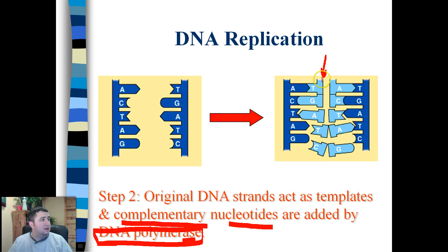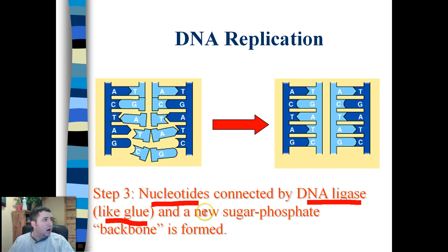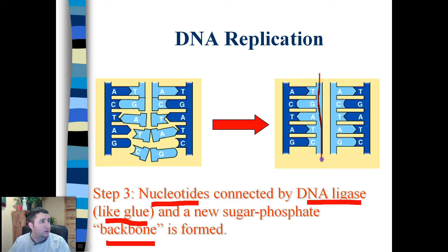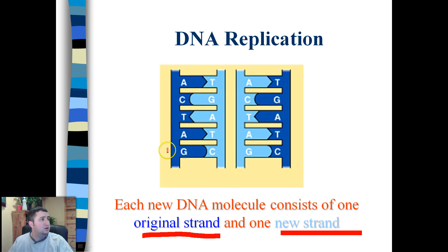Enzymes come through and add complementary base pairs to every original strand — it's like laying down the other side of the story. Step three: the nucleotides are connected by DNA ligase, which acts like glue, adding a new sugar-phosphate backbone. You can see that where nucleotides are being added they're not yet bonded together; DNA ligase binds them, and we get two full copies of DNA.